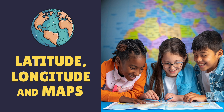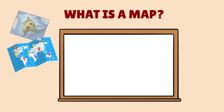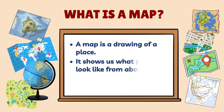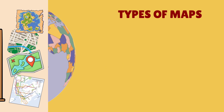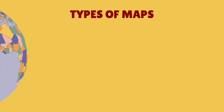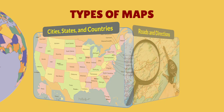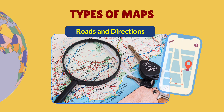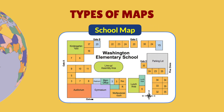Before we get into latitude and longitude, let's talk for a minute about maps. We've all seen maps, but what is a map exactly? A map is a drawing of a place that shows where different things are located. It shows us what places look like from above, and it helps us know where things are. There are all types of maps, like maps of cities, states, and countries, maps that show roads and directions, including maps on a smartphone. You've probably also seen a map that shows where everything is at your school.